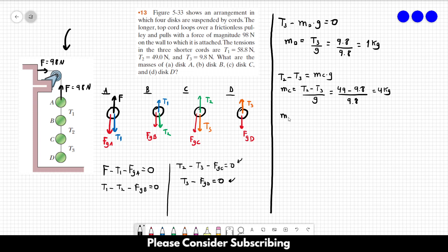For MB, isolate MB in this equation. MB equals T1 minus T2 over G. So this is equal to 58.8 minus 49 over 9.8, and this gives us 1 kilogram. So the mass of disc B is 1 kilogram.